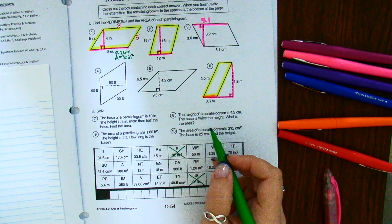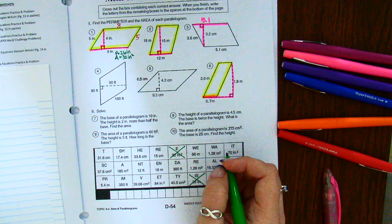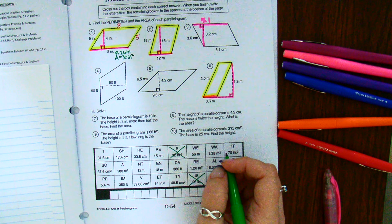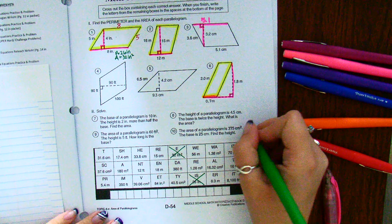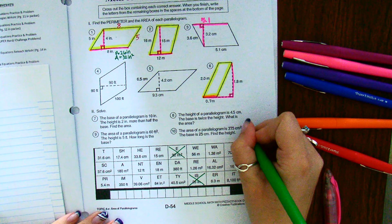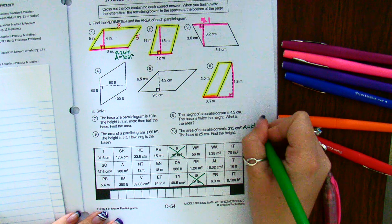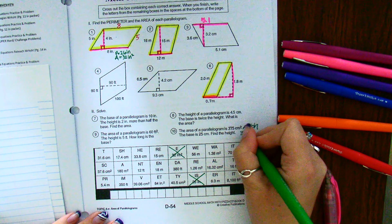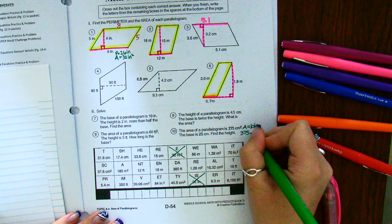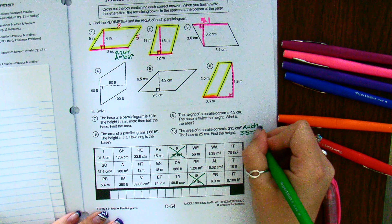My hint to you for number 10. It says the area of a parallelogram is 375 centimeters squared. So the area of a parallelogram is base times height. They told me the area is 375. So I replaced 375 for the area. And then they told me the base is 25.